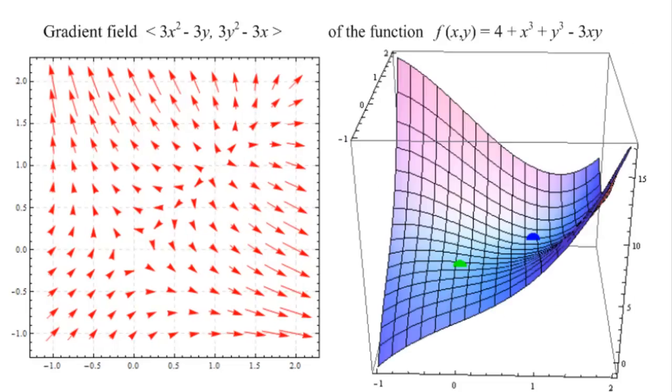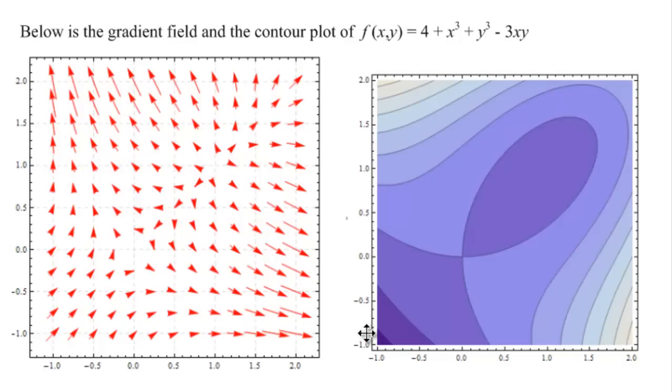Let's see the function it came from. We did this function, if you have been watching the other videos, when we talked about stationary points. We found the saddle point and the minimum. And there's the function and there's the gradient. And there's the cool contour map.